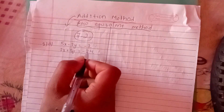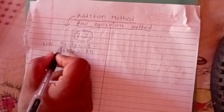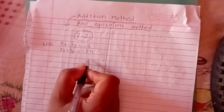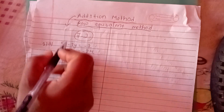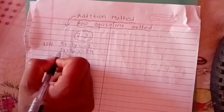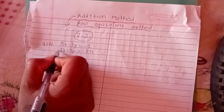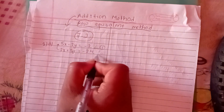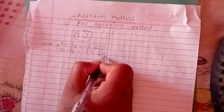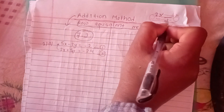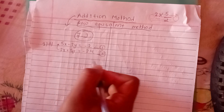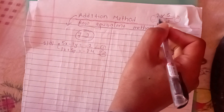We will apply the addition method. Using the same method, we need to eliminate a variable. We look at the 2y and 5y terms, and we consider multiplying to make coefficients match. We see 2 functions to keep 2x: 2 divided by 2 plus 5.